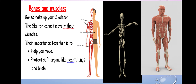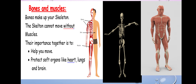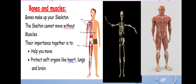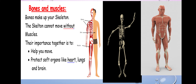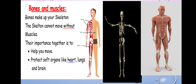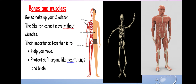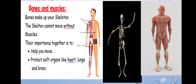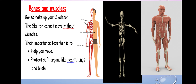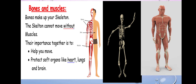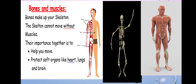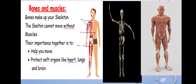What is the importance of muscle and bone together? They help us to move. What else? They protect the soft organs like the heart, lungs, and brain — those are very soft organs. The skeleton, bones, and muscles protect them from any damage, from any hurt. It's like a box around your muscle and bones that protects what's under it, like the heart, lung, and brain.